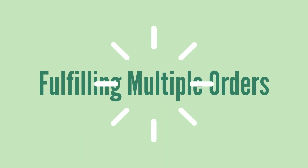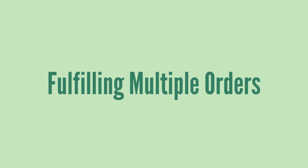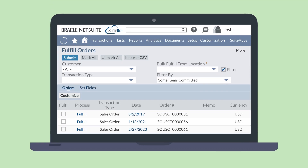If you want to fulfill multiple orders at once, you can also do that from the Bulk Fulfill Orders page. On that page, you would filter down the list of results using the top menu section. Then select the Fulfill checkbox next to every order you wish to fulfill and then hit the submit button. The only way to do a partial fulfillment of an order is to go into that item fulfillment record individually, but bulk fulfilling whole orders can save you a lot of time if you don't need to customize how much of the order is being fulfilled.